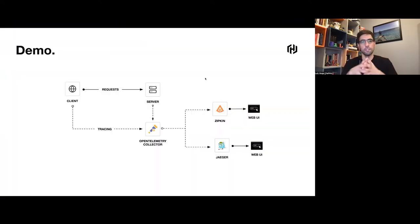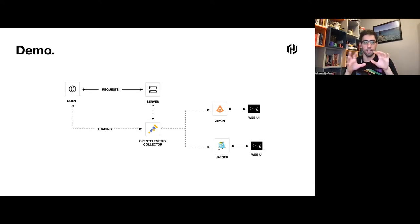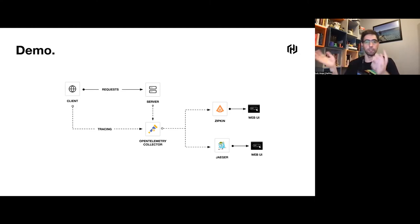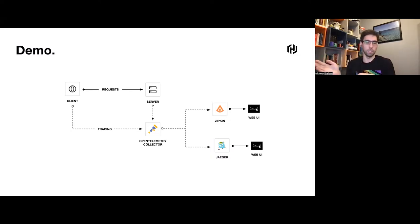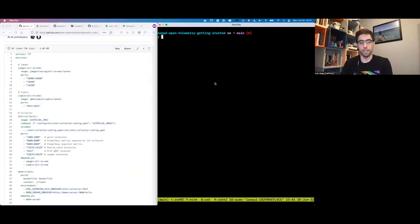The application has several services. The main flow is a client that makes requests to a server. Both units expose tracing data to the OpenTelemetry collector. The collector then forwards that information to a ZipKin deployment and a Jaeger deployment, and we can access the web UI to see the data. Understanding what the file is doing is the first step to translating it.